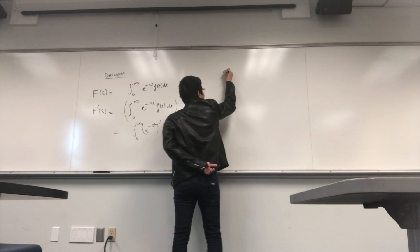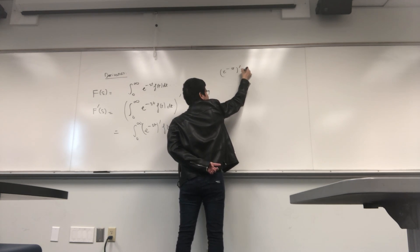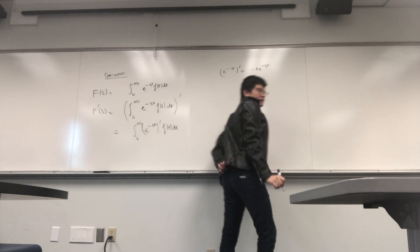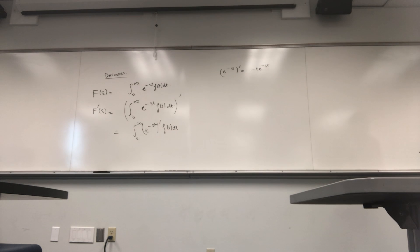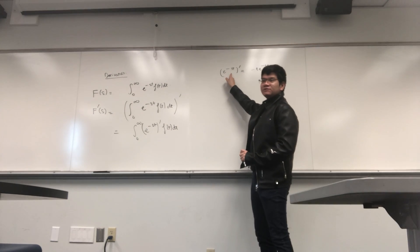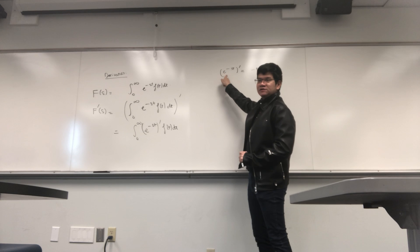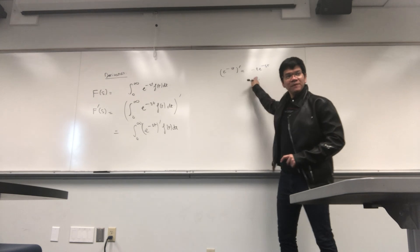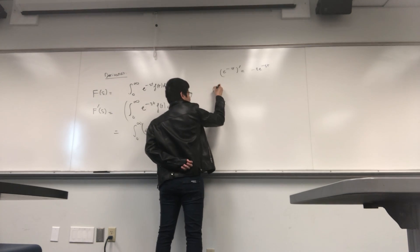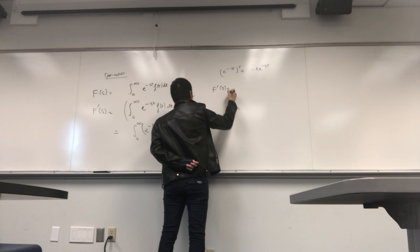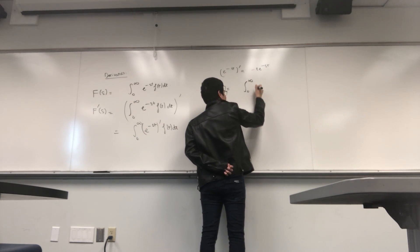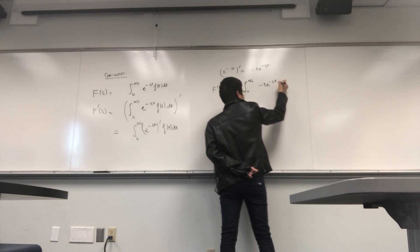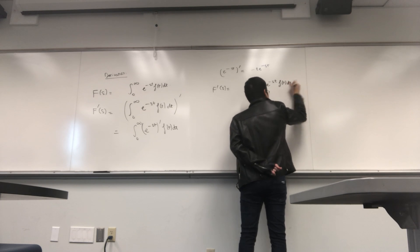We know that the derivative of e^{-st} with respect to s is −t · e^{-st}. Plugging this in, the derivative becomes the integral from 0 to infinity of −t · e^{-ts} · f(t) dt.